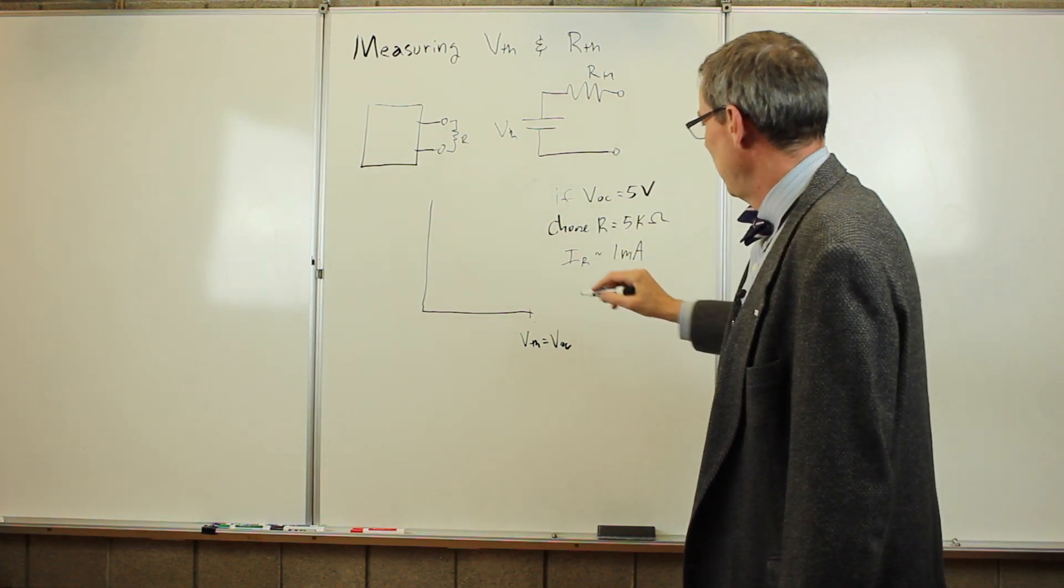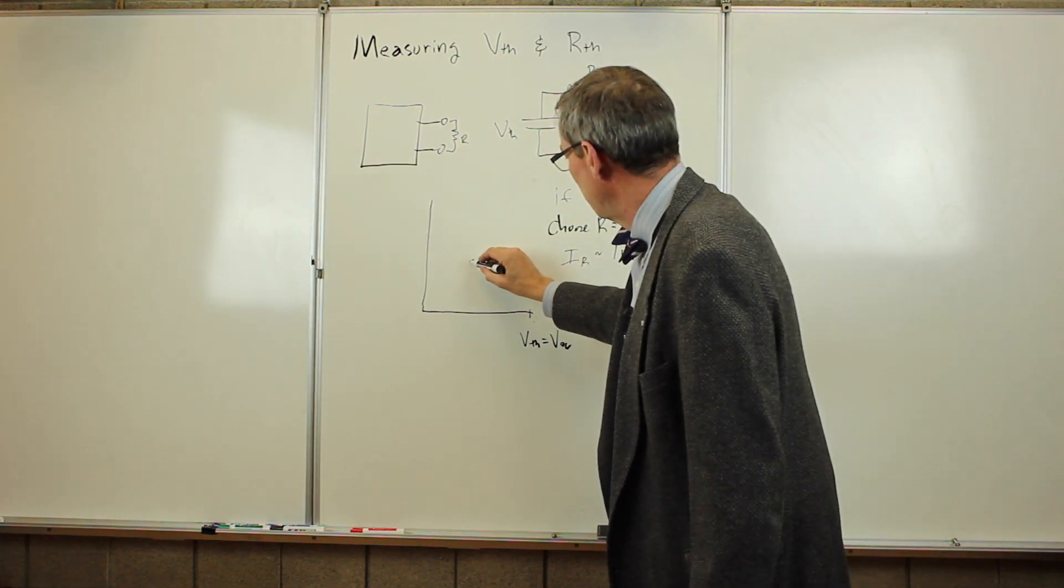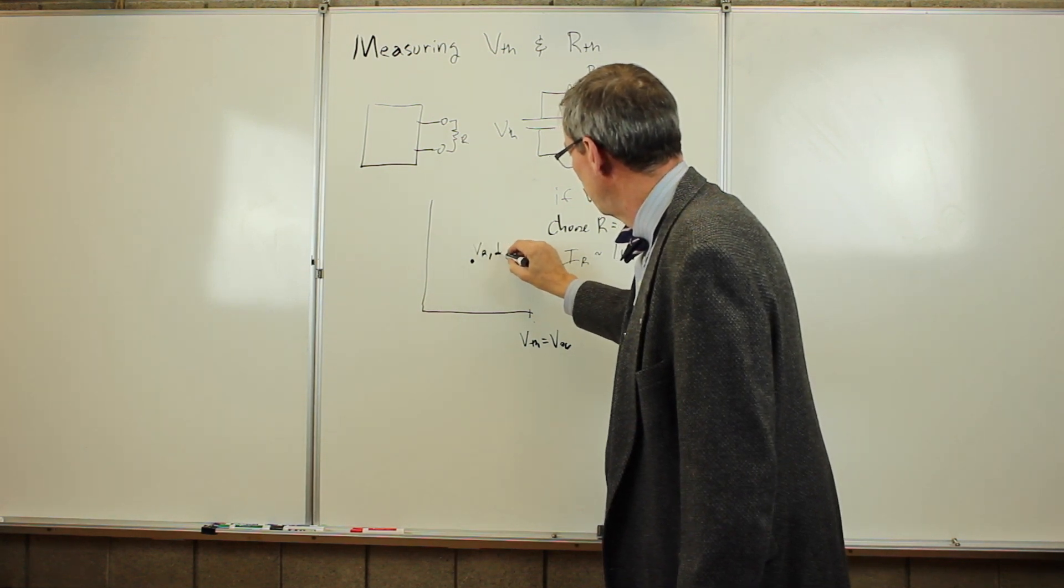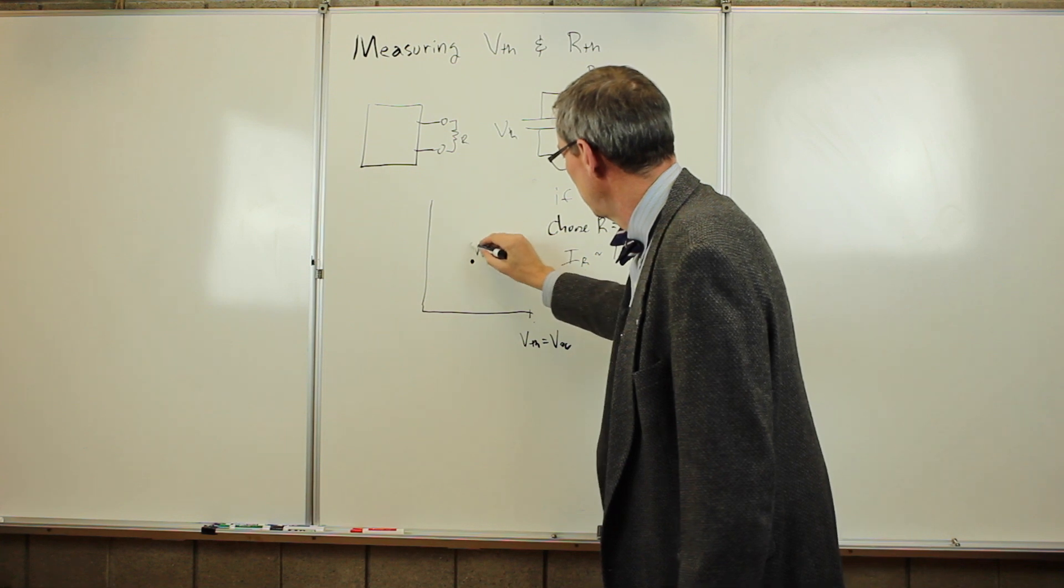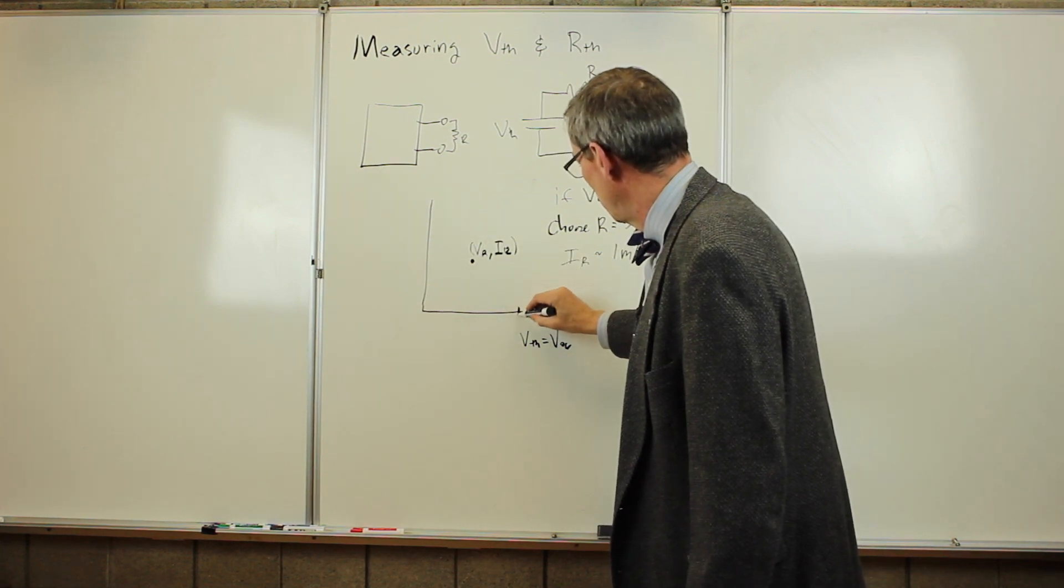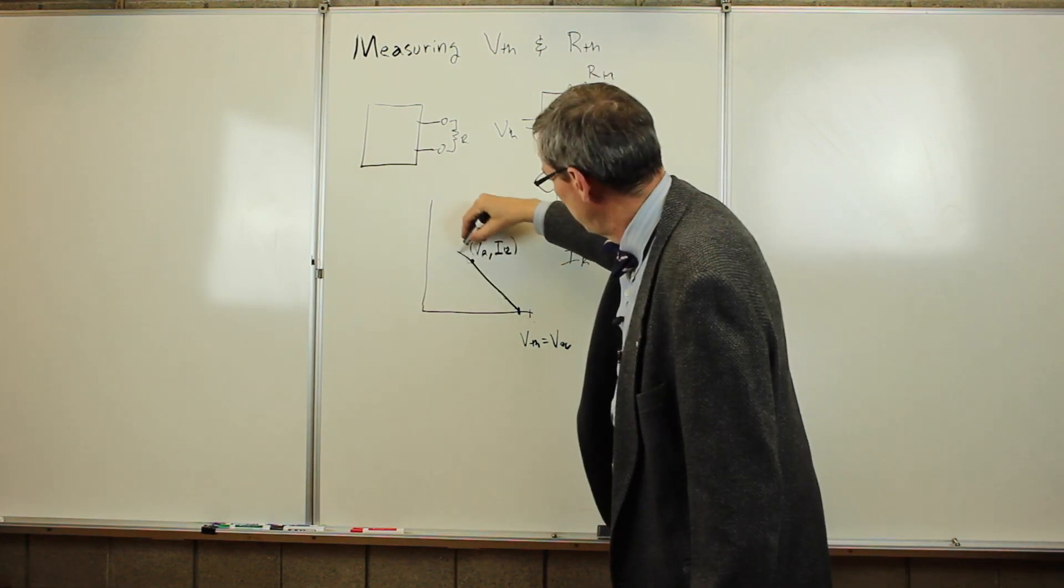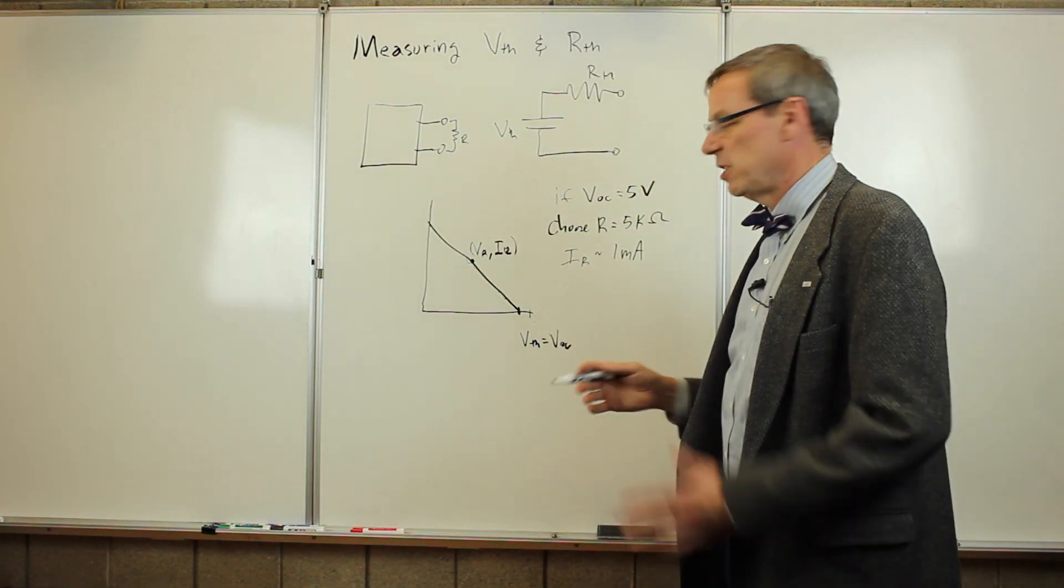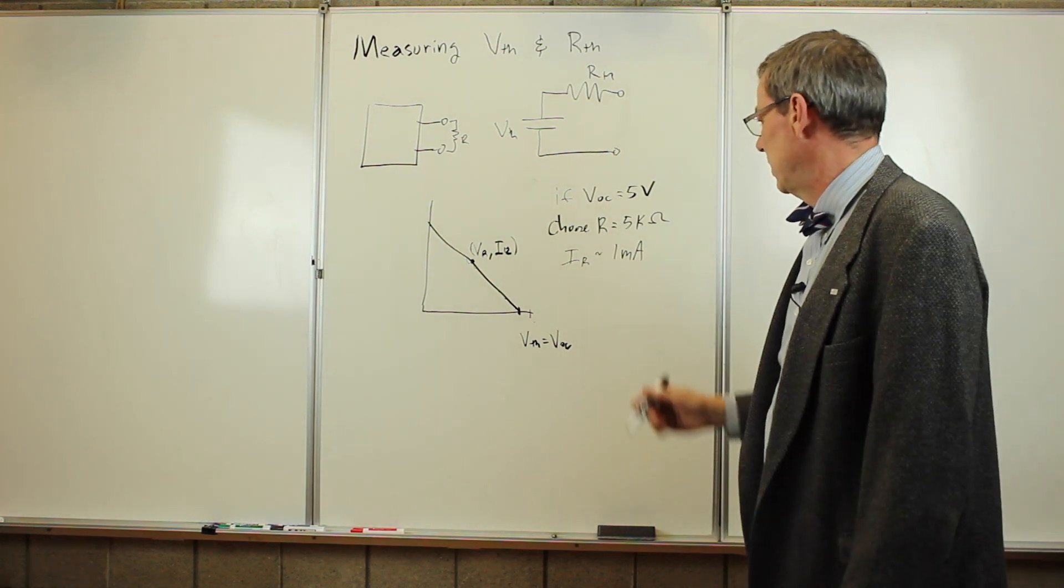So we'd go and do that. We'd measure then that point there. And what that's going to do is give us a point here, some measured voltage with that resistor and some measured current with that resistor. And here's our open circuit, and then our IV curve looks like that. And with this point and this point, we can now fit the line and determine what the Thevenin resistance is.